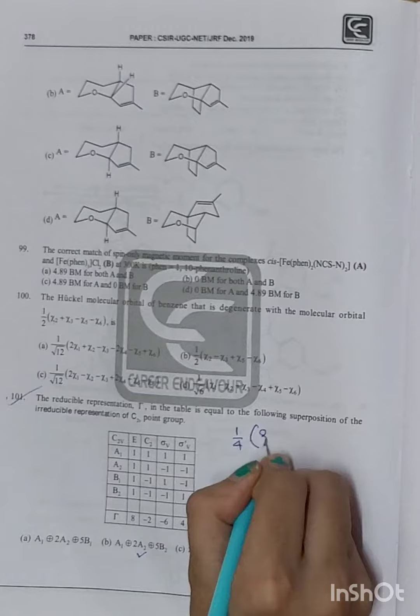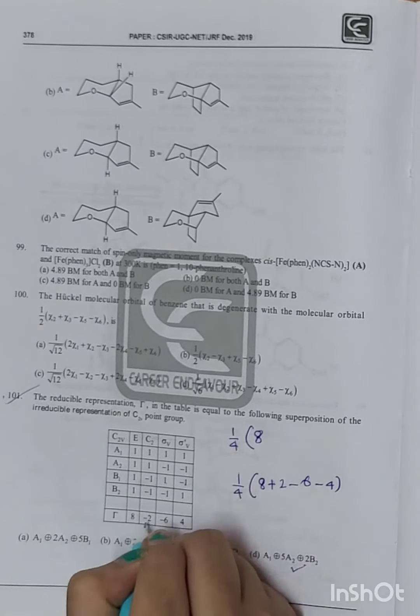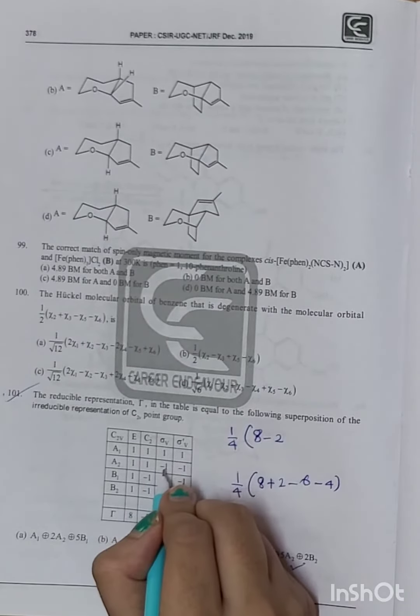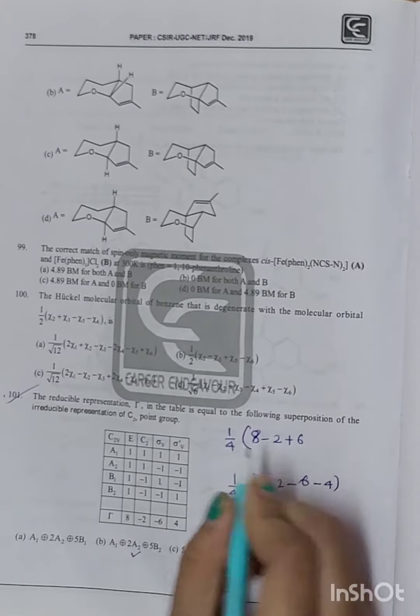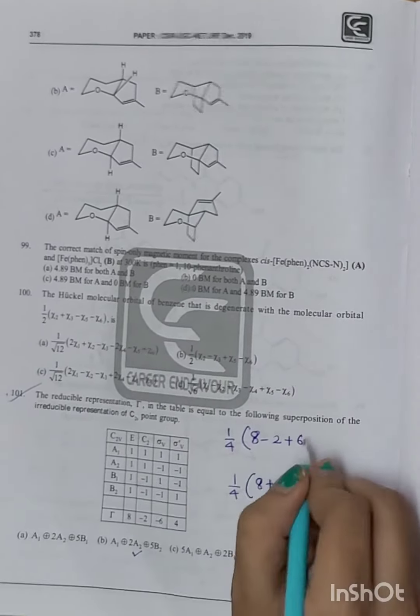1 into 1 into 8. 1 into 1 into minus 2, minus 2. 1 into minus 1 into minus 6, plus 6. 1 into minus 1 into 4, minus 4.